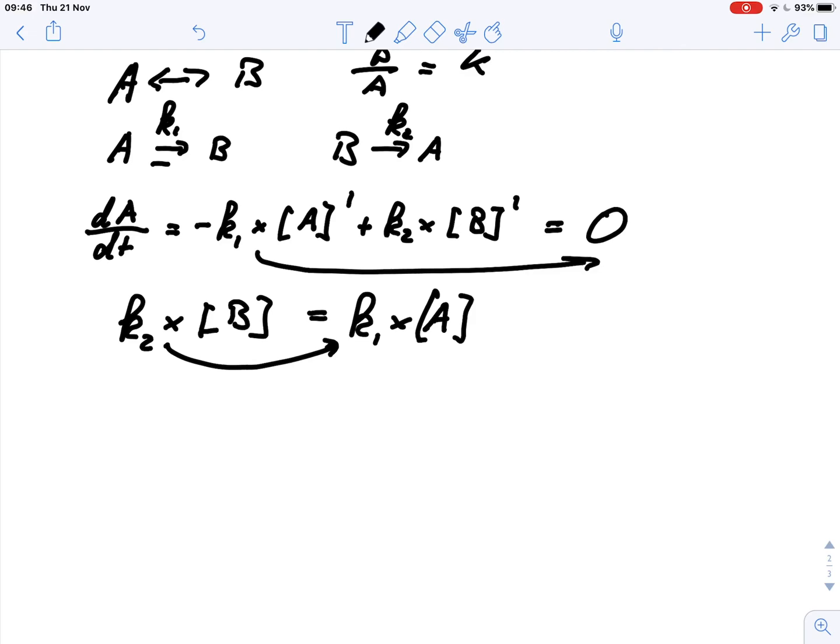And I bring the k to that side, I bring the A to this side, so I have B over A equals k1 divided by k2.